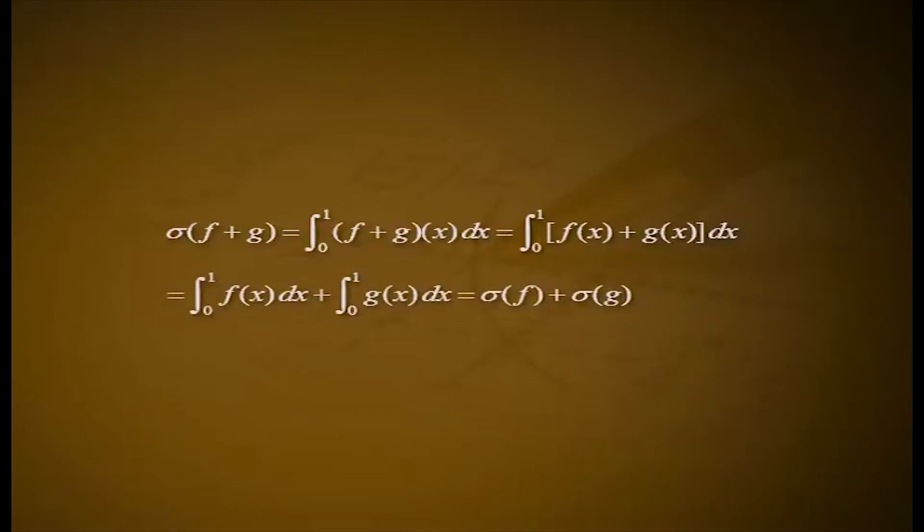Example 6: Let F be the additive group of continuous real-valued functions with domain [0,1], and let R be the additive group of real numbers. The map sigma from F to R defined by sigma of f equals the integral from 0 to 1 of f(x) dx is a homomorphism. For any f, g in F, sigma of f plus g equals the integral of (f+g)(x) dx, which equals the integral of f(x) dx plus the integral of g(x) dx, which equals sigma of f plus sigma of g.